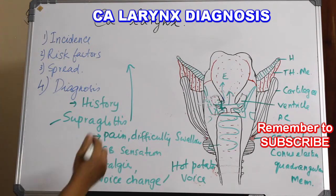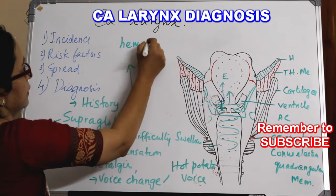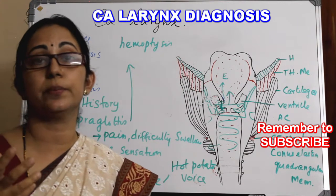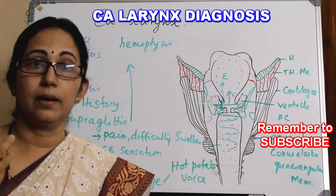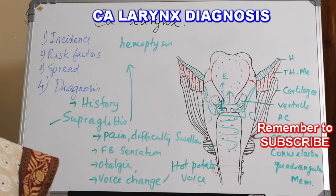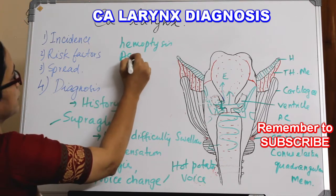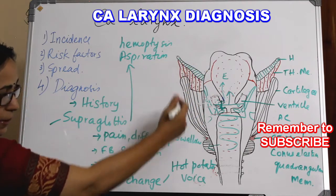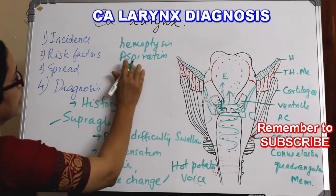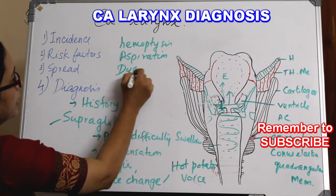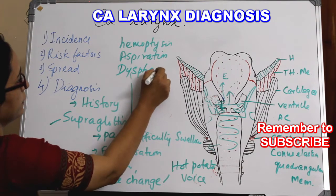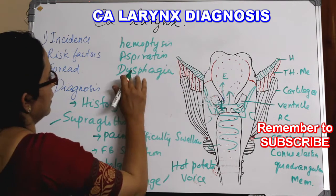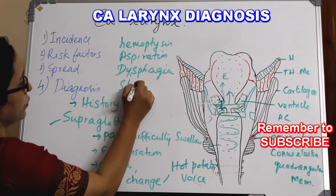In later stages there will be hemoptysis, because supraglottic CA usually produces an exophytic or proliferative lesion which can cause hemoptysis. There will also be aspiration, and if the tumor spills over to the pyriform fossa, it can cause severe dysphagia — difficulty in swallowing or painful swallowing. Later still, there will be difficulty in breathing and stridor.